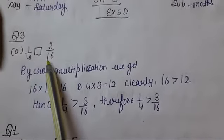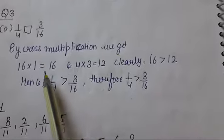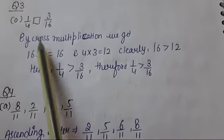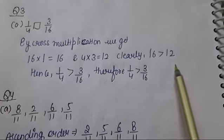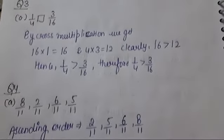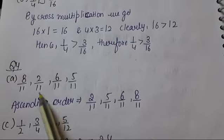1 upon 4 and 3 upon 16. By cross multiplication we get 16 into 1 is 16, and 4 into 3 is 12. Clearly 16 is greater than 12, that's why 1 upon 4 is greater than 3 upon 16. Question number 2: